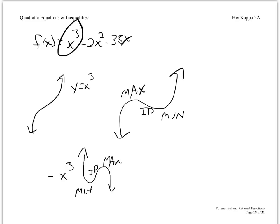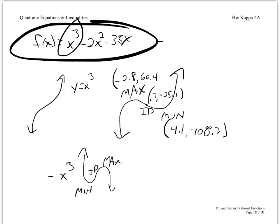When you put your critical values in ascending order from smallest to biggest, in this case negative 2.8 gives y = 60.4 — that's the maximum. Then 0.7 gives negative 25.1 — the inflection point. And 4.1 gives negative 108.2 — the minimum. Just looking at the leading term of the original equation tells you which critical value is the minimum, maximum, and inflection point.